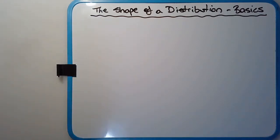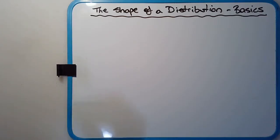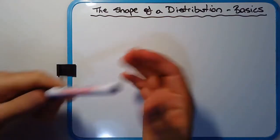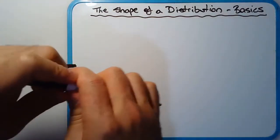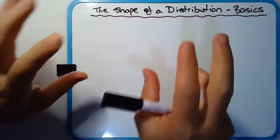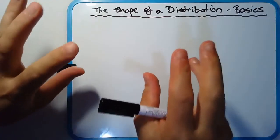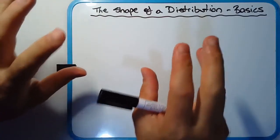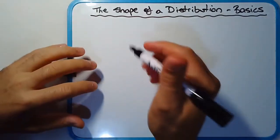I'm going to spend a moment to talk about and discuss the importance of the shape of a distribution. In particular, when we're analysing groups of scores, just looking at the way they're distributed can tell us a lot about what's going on with that particular group, sample, or population.